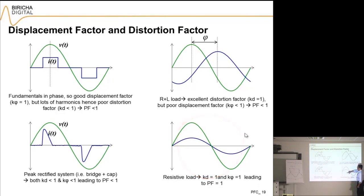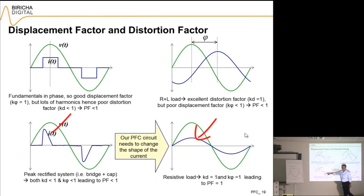Finally, in this one you have got a sinusoidal voltage, you've got a sinusoidal current, they are in phase with each other. This is what you get if you just stick a resistor across a load, and that has got perfect distortion factor and perfect displacement factor. If you don't have a resistor, your power factor correction circuitry will need to force the current to look like this, and that is the whole point of power factor correction.